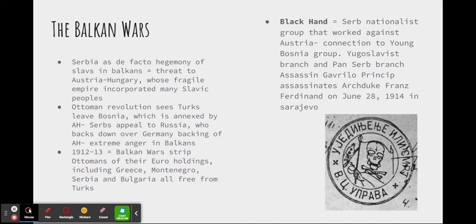Around this time, the Ottoman Revolution occurred and the Turks had to leave Bosnia, which gave the Austro-Hungarians a chance to run in and annex the region. This angered the Serbs, because they were hoping to unite the Balkan peoples under one political state, mostly under Serbian hegemony. They appealed to Russia, seen as the greatest of the Slavic nations, who unfortunately ended up backing down because Germany backed Austro-Hungary's decision to annex Bosnia. This caused extreme anger in the Balkans.